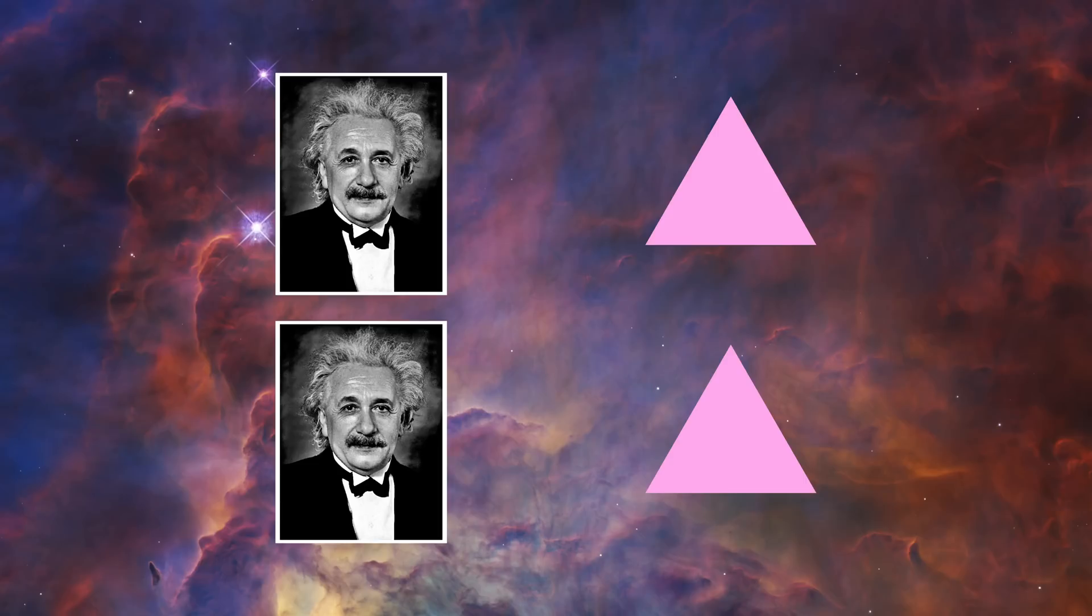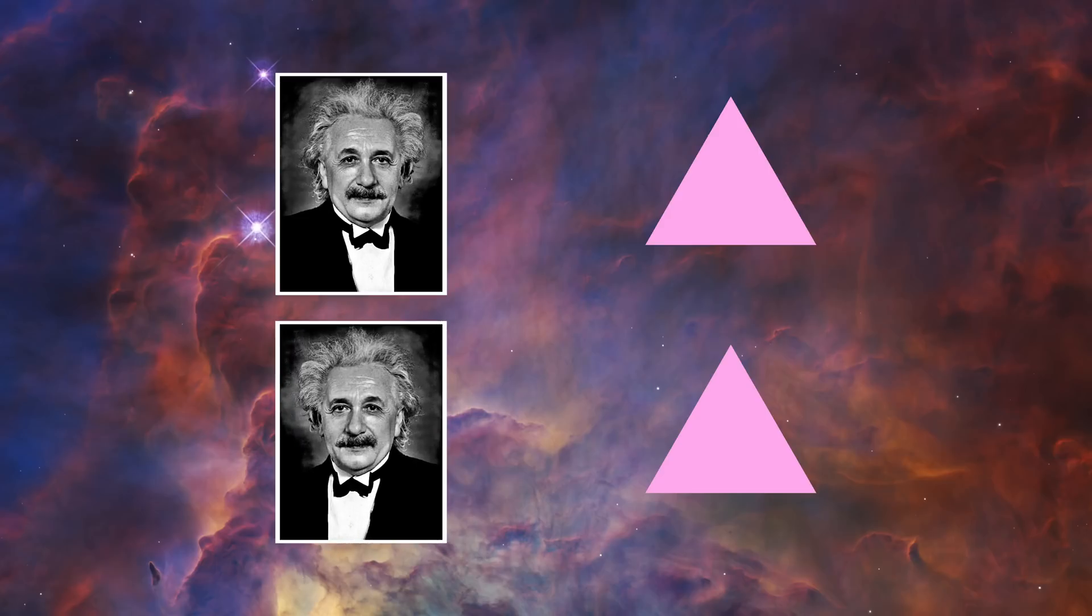So what are symmetries? Symmetries have a colloquial meaning. Faces are symmetric because if you flip them around a vertical axis, they look pretty much the same. Or if you rotate a triangle by 120 degrees, it looks the same.